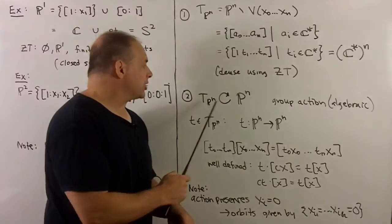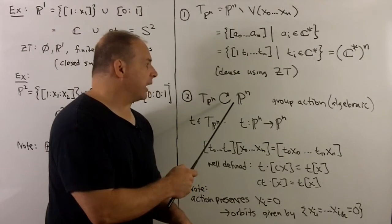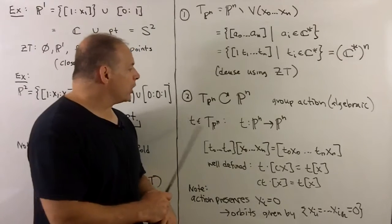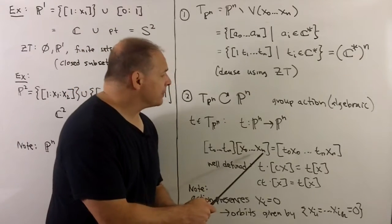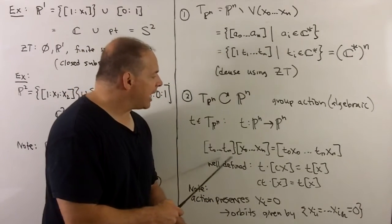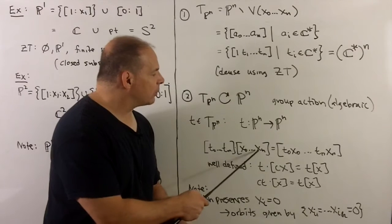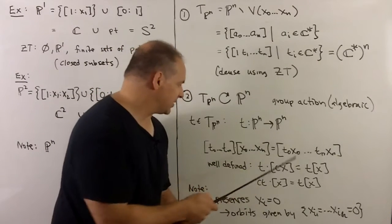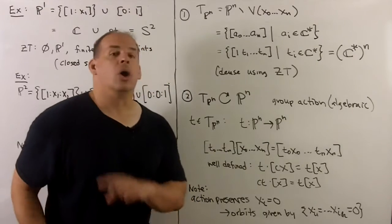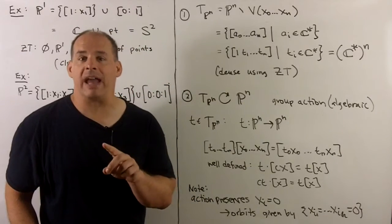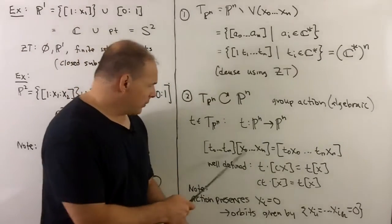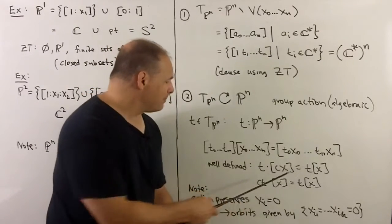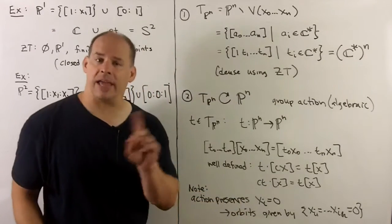For the group action on the whole projective space: we simply multiply entry-wise. If we have (t_0, ..., t_n) acting on [x_0 : ... : x_n], we get [t_0 x_0 : ... : t_n x_n]. We need to make sure this is well-defined, meaning if we change either the t or the x by scalar multiplication, the same answer results — and that's straightforward.